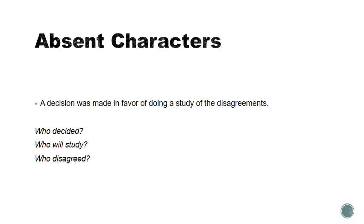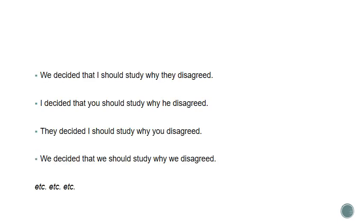The problem — or danger — of passive voice is that we can totally omit the characters. The characters could be completely absent from the sentence and it could still be grammatically correct. For example: 'A decision was made in favor of doing a study of the disagreements.' Who decided? Who's going to do the study? Who's disagreeing? We have no idea because it's all omitted. This sentence can mean all sorts of different things: 'we decided I should study why they disagreed,' 'I decided you should study why he disagreed,' 'they decided we should study why we disagreed' — we don't know who's doing any of these actions.